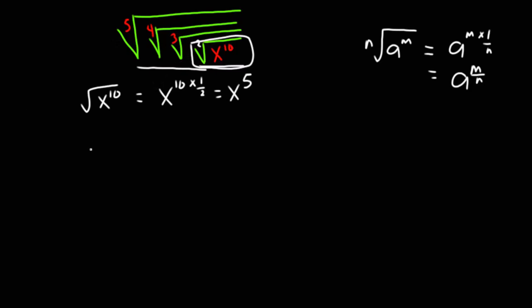After simplifying the square root, I'm left with the fifth root, then the fourth root, then the third root. The square root is no longer present because we've already simplified it, and what remains is the fourth root of x exponent 5.